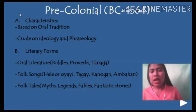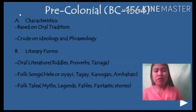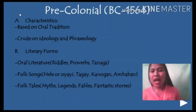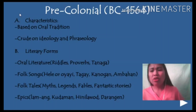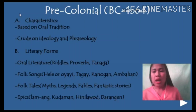Another form is folk tales, which includes myths — explaining how the world was created and how certain animals possess certain characteristics, as well as why certain places have mountains, waterfalls, volcanoes, etc. Fables use animal characters or allegory. Fantastic stories deal with underworld characters like the tiyanak, aswang, and kapre — used in horror movies. Lastly, epics are narratives of sustained length based on oral tradition, revolving around supernatural events or heroic deeds. Examples include Biag ni Lam-ang from the Ilocanos, Kudaman from Palawan, Hinilawod from Panay, Darangen from Maranao.